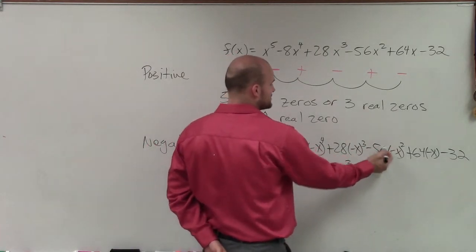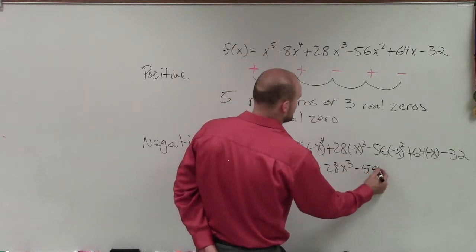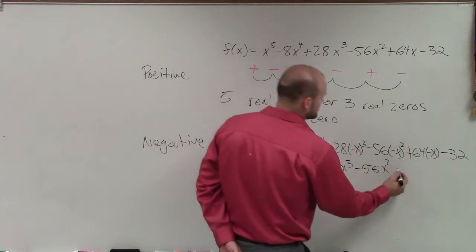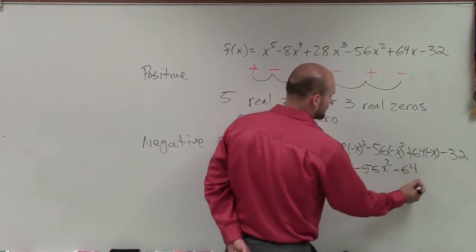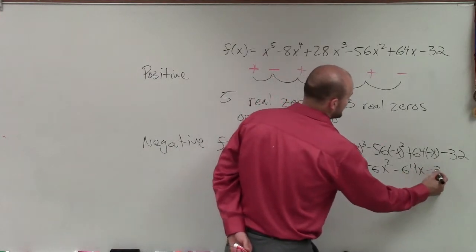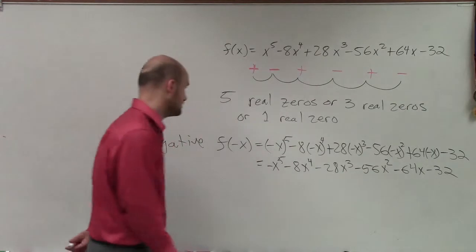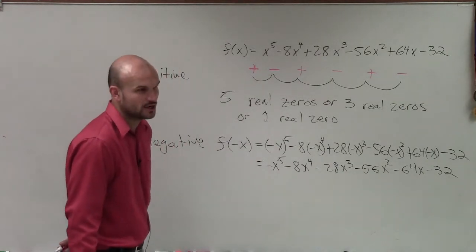Negative x squared is positive times 56 is a negative 56x squared. This becomes a negative 64x, and then minus 32. So unless I made any other mistake, I'm not seeing any alternating signs, right?